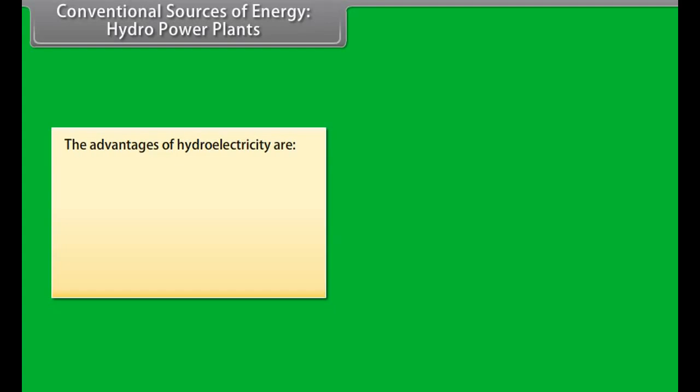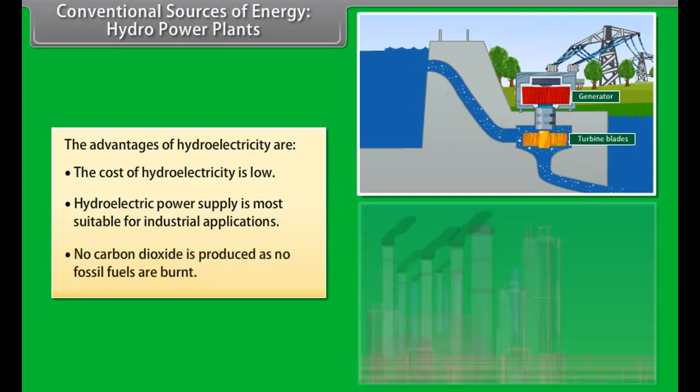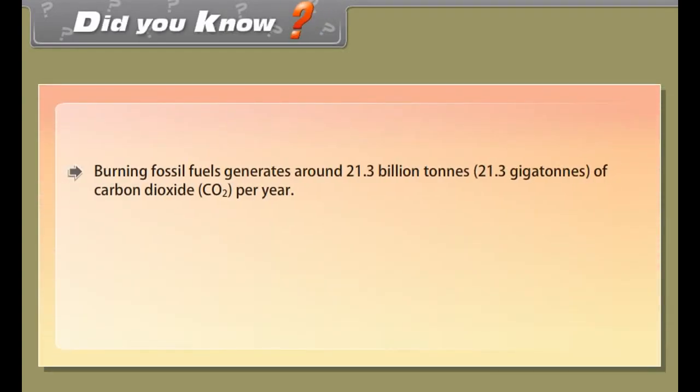Hydropower plants generate electricity from the energy of falling water. Hydropower is a renewable source of energy. The advantages of hydroelectricity are: the cost of hydroelectricity is low, hydroelectric power supply is more suitable for industrial applications, and no carbon oxide is produced as no fossil fuels are burnt.